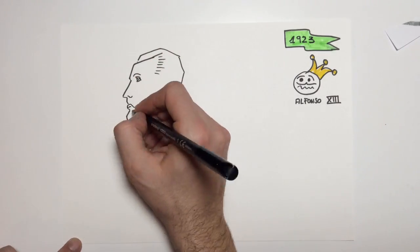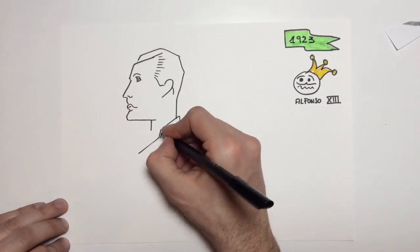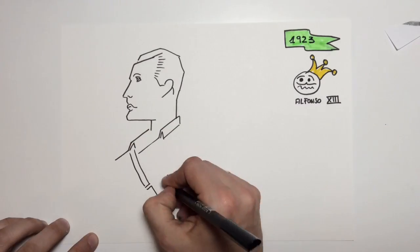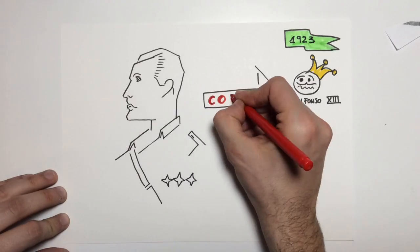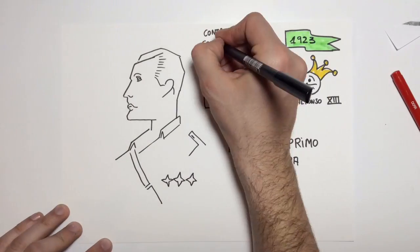Taking advantage of the social and political conflict, the general Primo de Rivera is going to lead a coup in 1923. In a coup, a person or a group takes control of a government by force.